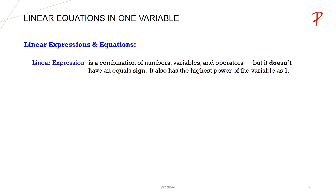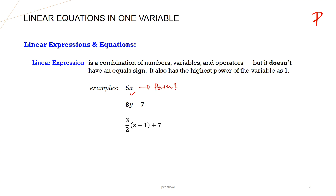It also has the highest power of the variable as 1. Some examples of linear expressions are 5x, 8y-7, 3/2·z-1+7. These are linear expressions because each variable has a power of 1. In 5x, x is the variable and it has a power of 1.